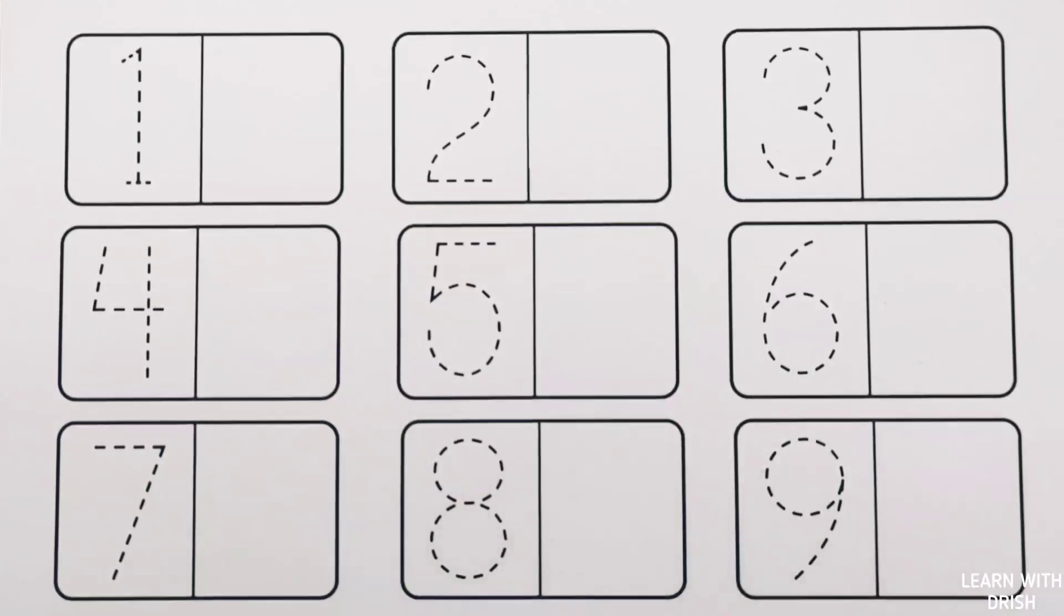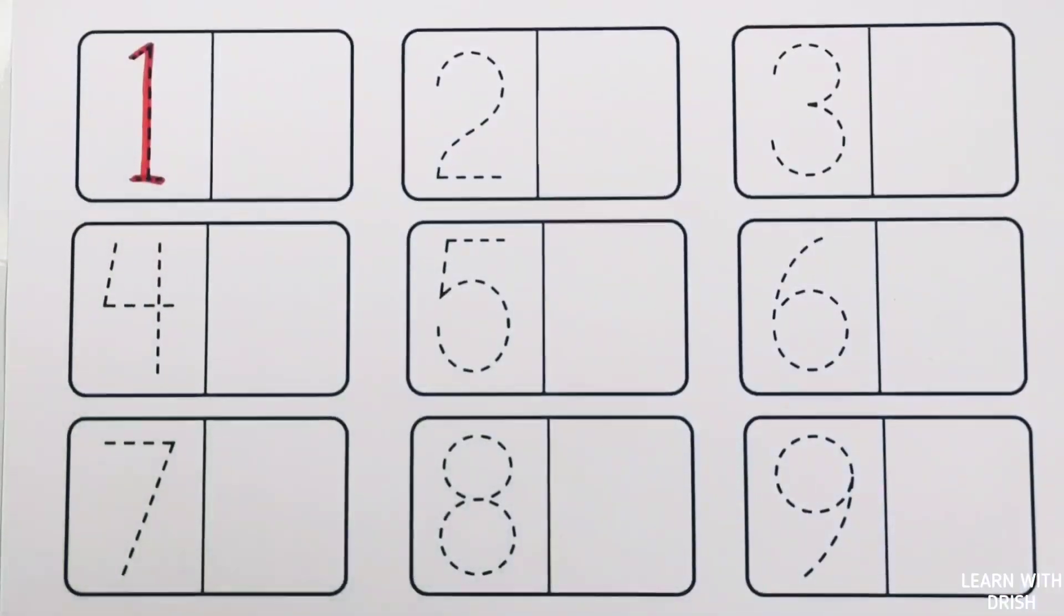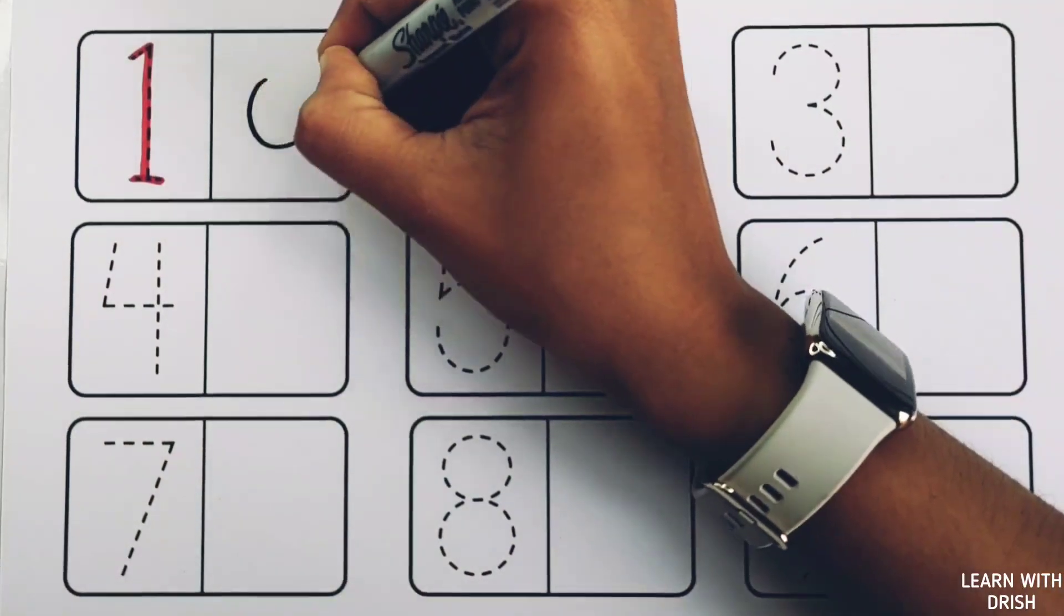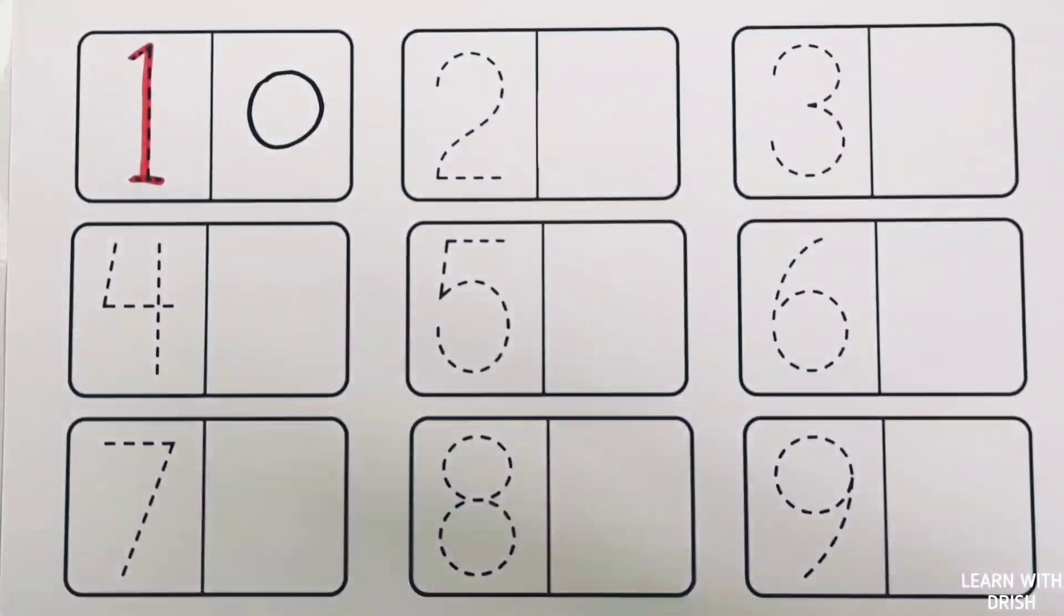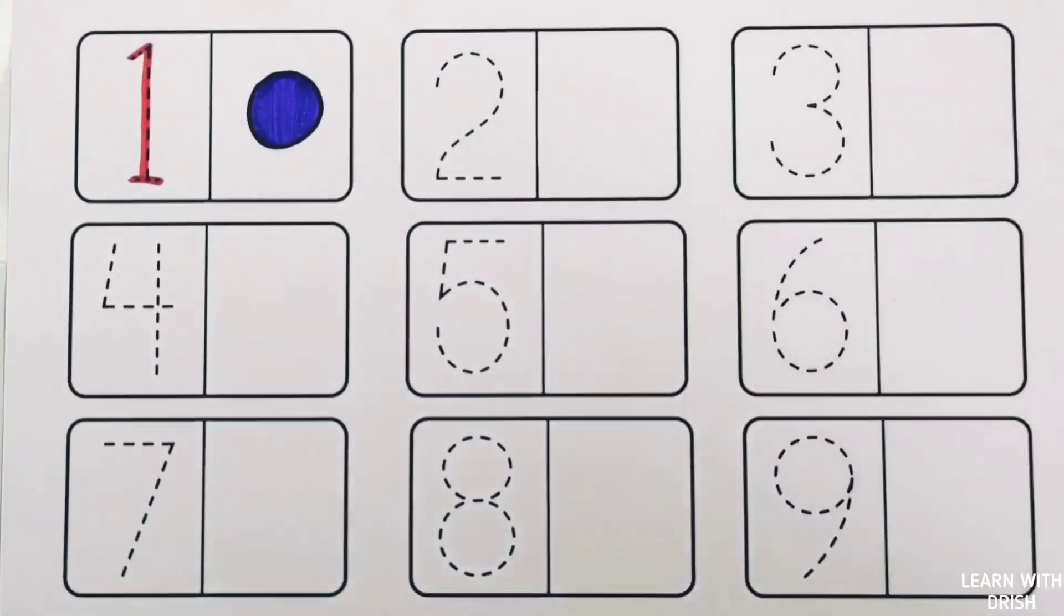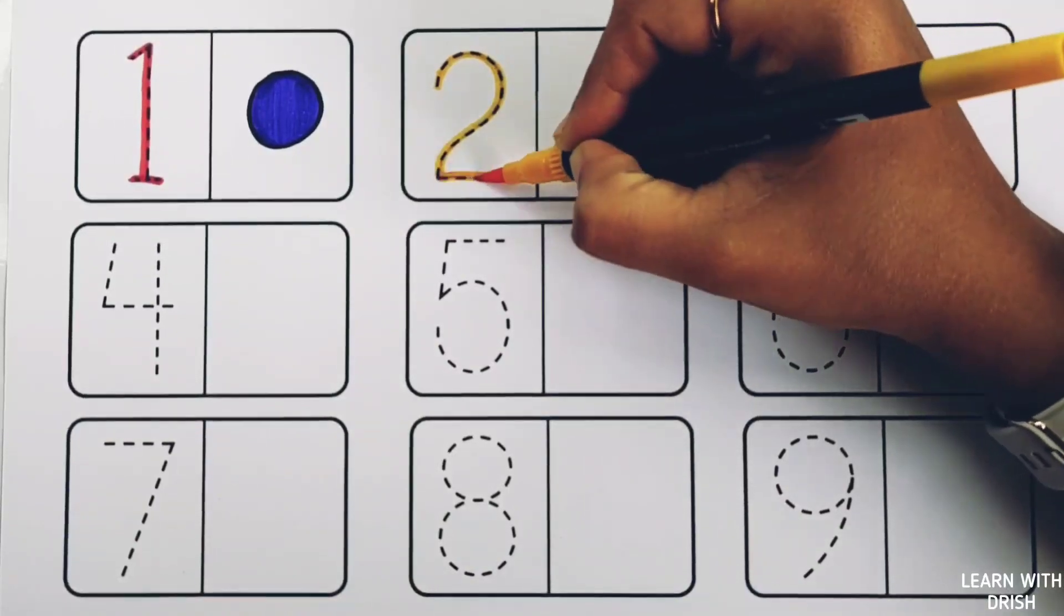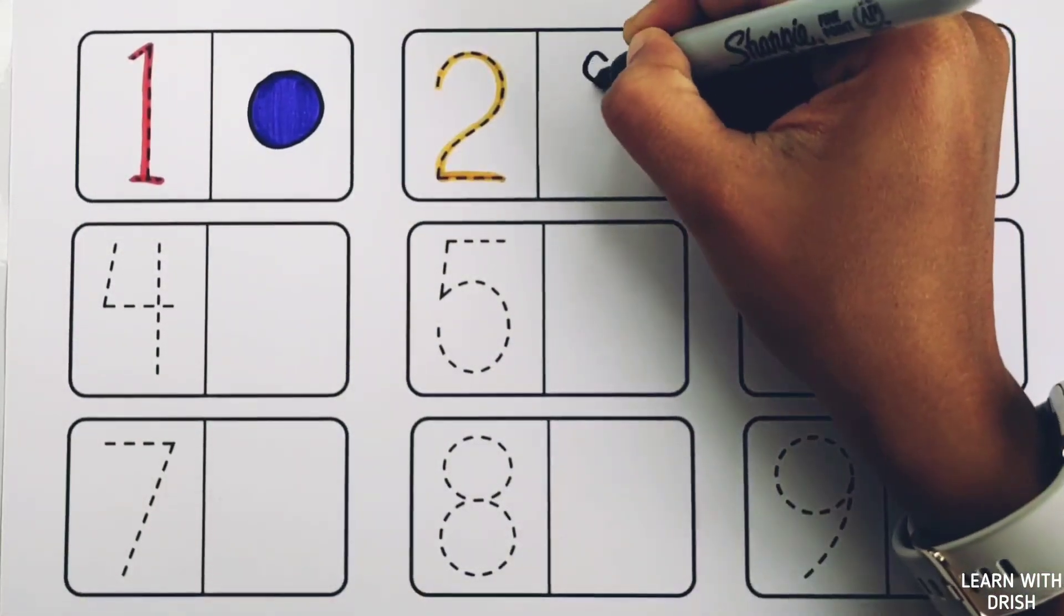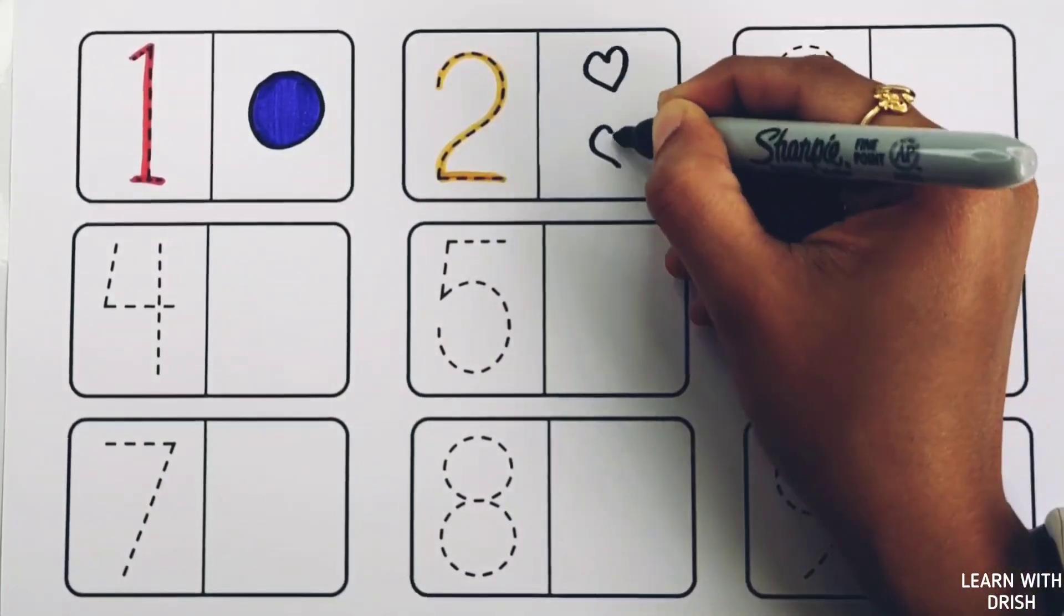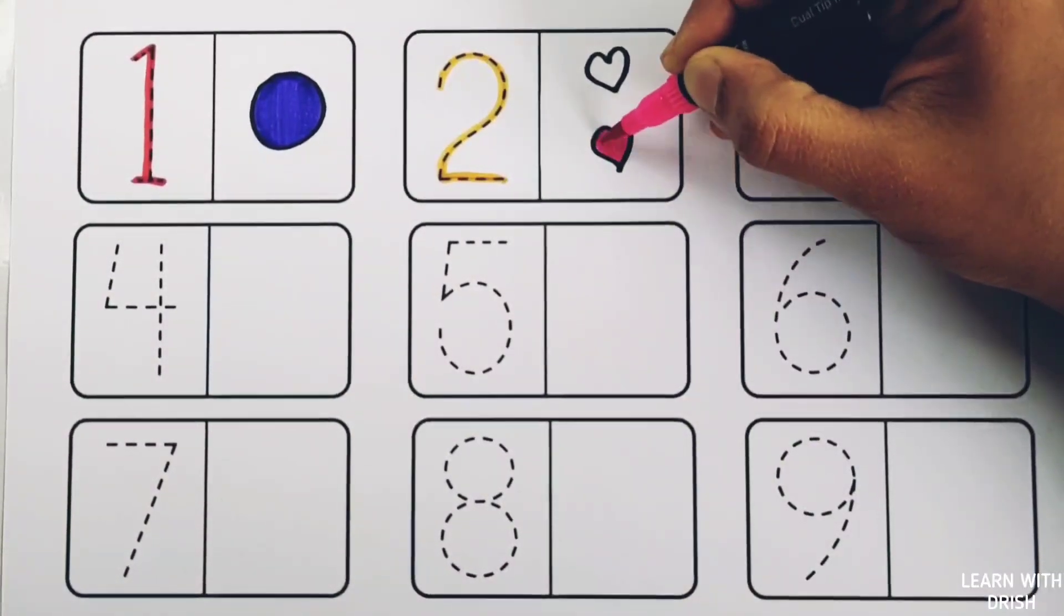Nine. One, one circle, violet color. Number two. One, two. Two hearts, pink color.